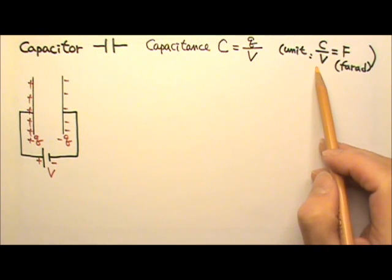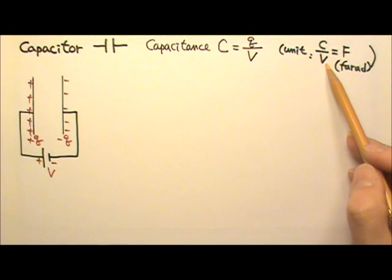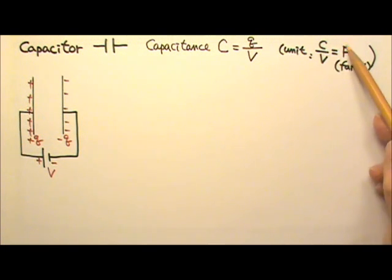The unit of capacitance is Coulombs per volts, and it gets a special name, capital F, Farad. It's named after Michael Faraday.